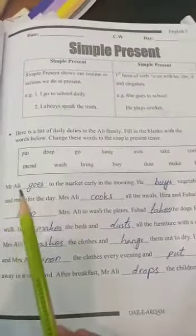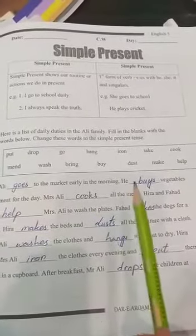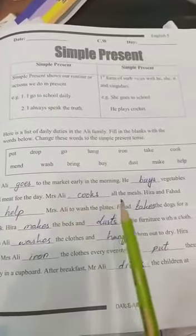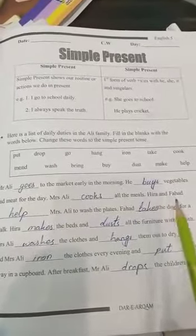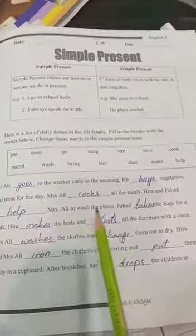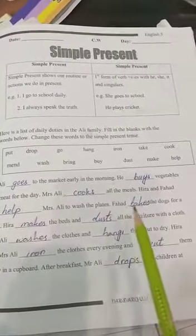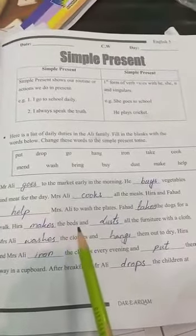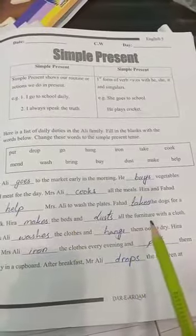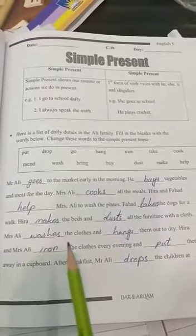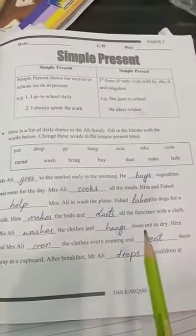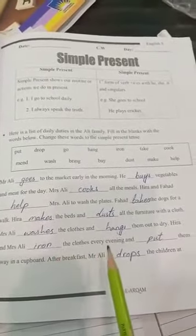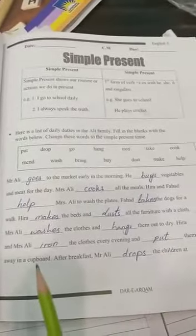Mr. Ali goes to market early in the morning. He buys vegetables and meat for the day. Mrs. Ali cooks all the meals. Hira and Fahad help Mrs. Ali to wash the plates. Fahad takes the dog for a walk. Hira makes the bed and dusts all the furniture with the cloth. Mrs. Ali washes the clothes and hangs them out to dry.